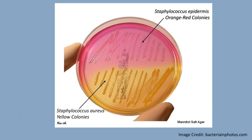Here on this mannitol salt agar plate, two types of Staphylococci are streaked. The bacteria streaked on the lower side of the plate is Staphylococcus aureus; it ferments the mannitol, therefore there is acidic pH below 6.8. Therefore, Staphylococcus aureus and the surrounding medium appear yellow in color. The bacteria streaked on the upper side is Staphylococcus epidermis; it doesn't utilize mannitol, therefore there is no change in pH and the pH of the medium is neutral. Therefore, Staphylococcus epidermis and surrounding medium appear orange-red colored. In this way, by using phenol red, we can easily differentiate between the acid producing and non-acid producing species of Staphylococci based on the color change.